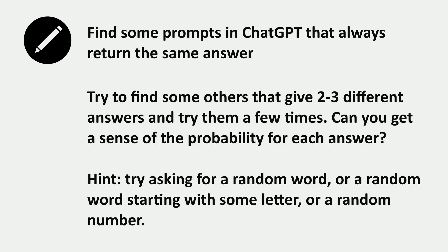Now that we understand how language models represent the probabilities of next words, I want you to explore this a little bit. Try some prompts in ChatGPT that always return the same answer, and try to find some that give a few different answers. Keep giving the same input and try to estimate the probabilities by seeing how frequently it gives one output versus another. One thing to try is asking for a random word, a random word starting with a letter, or a random number — you'll find it doesn't produce as many different things as you might think.